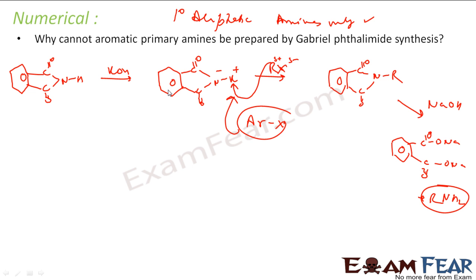You have alkyl halide here, it works fine. But if you have aryl halide, it does not work. For example, if you have this benzene ring, this reaction won't happen. This benzene with the positive charge will not be able to replace K+.